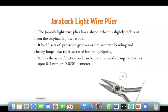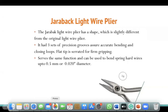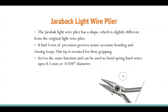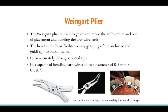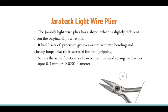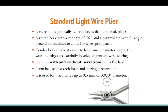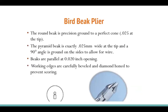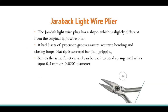The Jarabak light wire plier is slightly different from the standard light wire plier — it has three sets of precision grooves on it, which help in accurate bending and closing of loops. The flat tip is serrated for firm grip. It serves the same function and can be used to bend wire up to 0.5mm diameter. You can buy either the Jarabak wire plier, the standard light wire, or the bird beak — you don't need all three varieties as a starter.